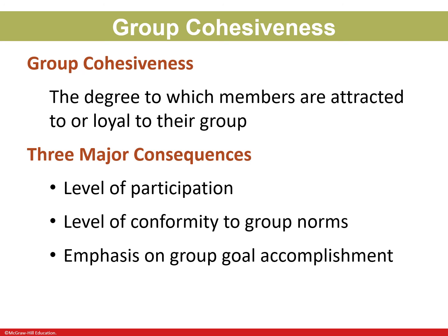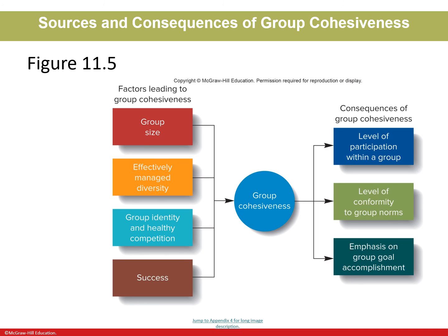Group cohesiveness is the degree to which members are attracted to or loyal to their group. The three major consequences of group cohesiveness are: the level of participation, the level of conformity to group norms, and the emphasis on group goal accomplishment. Factors leading to cohesiveness include group size, effectively managed diversity, group identity, healthy competition, and success.